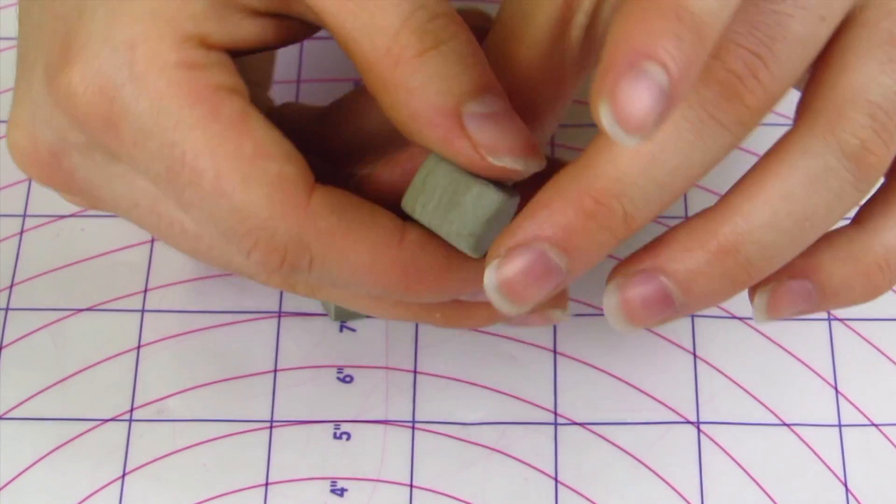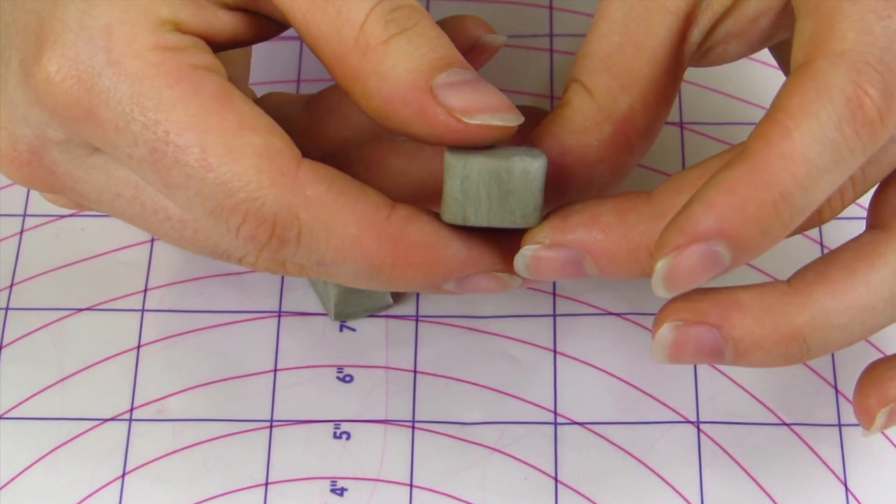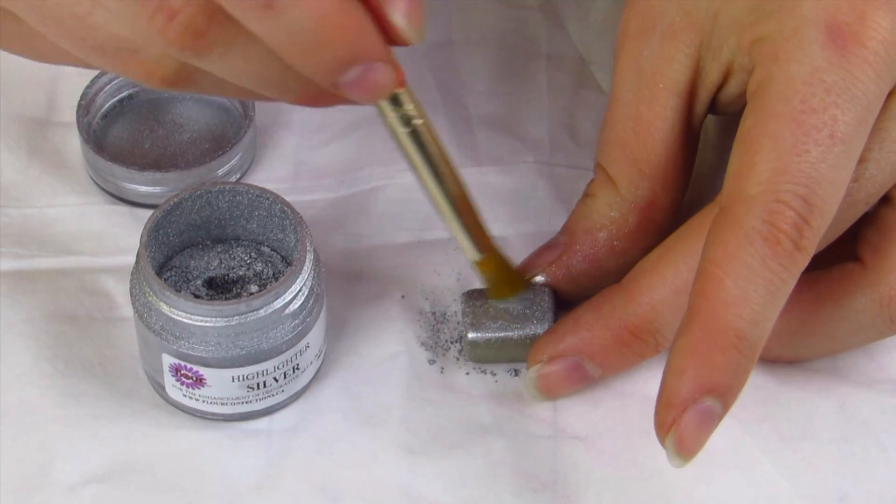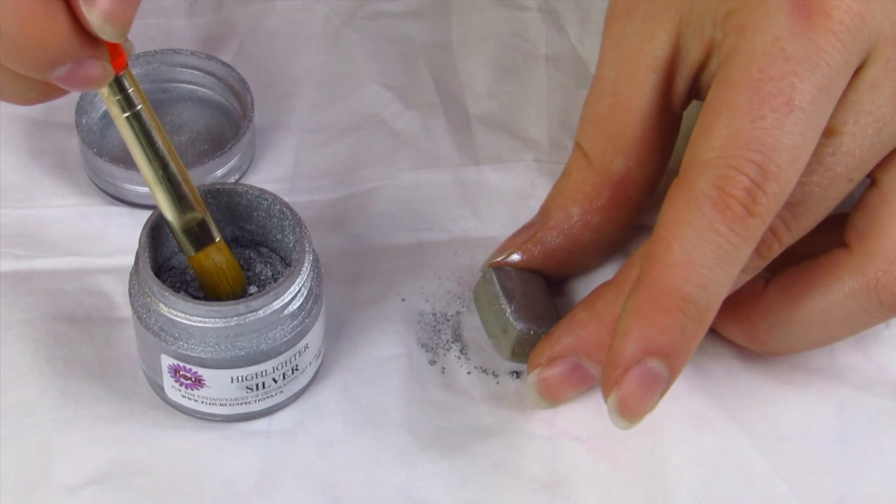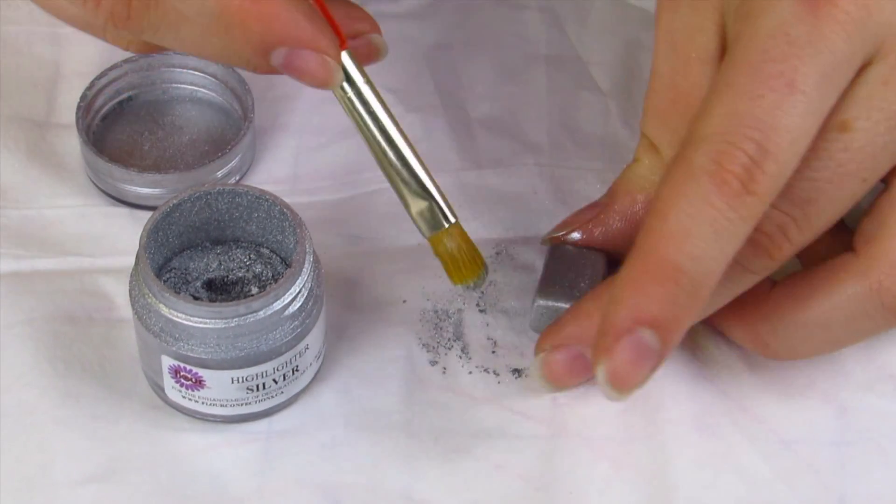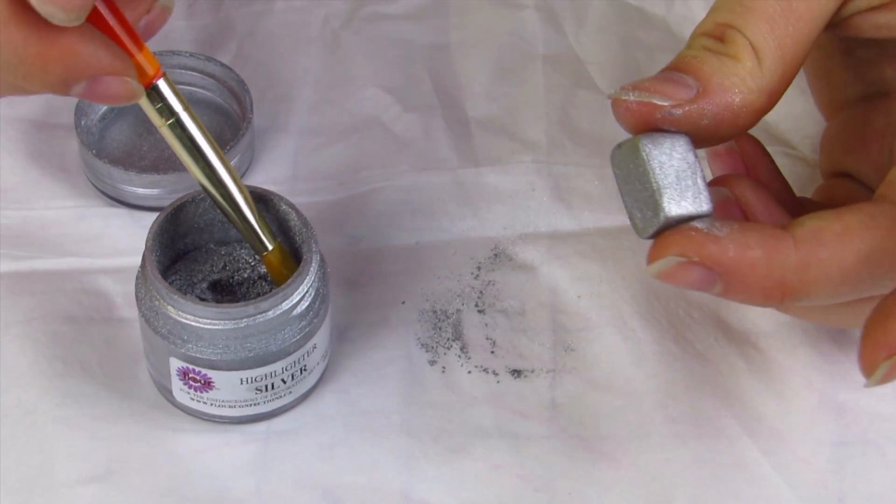Now using silver luster dust or a silver highlighter you just want to dust the top of your hammer. I really like the silver highlighter because it covers completely. As you can see it really coats the entire hammer and you can't really see any of that gray showing through.